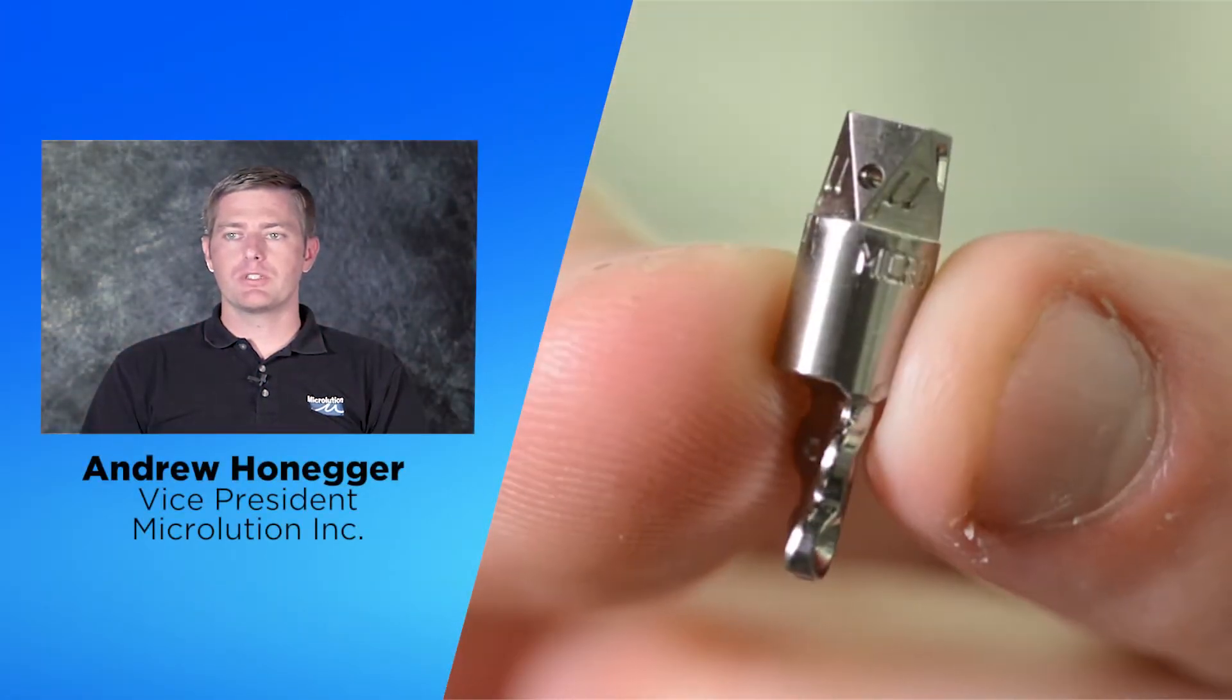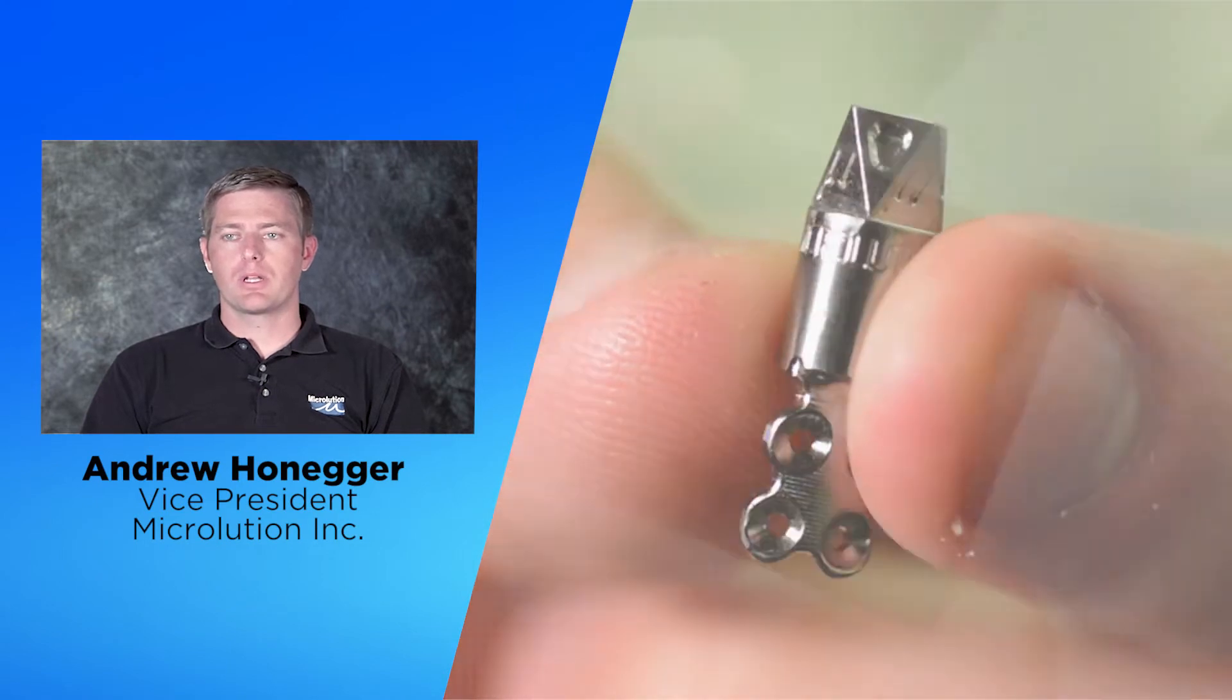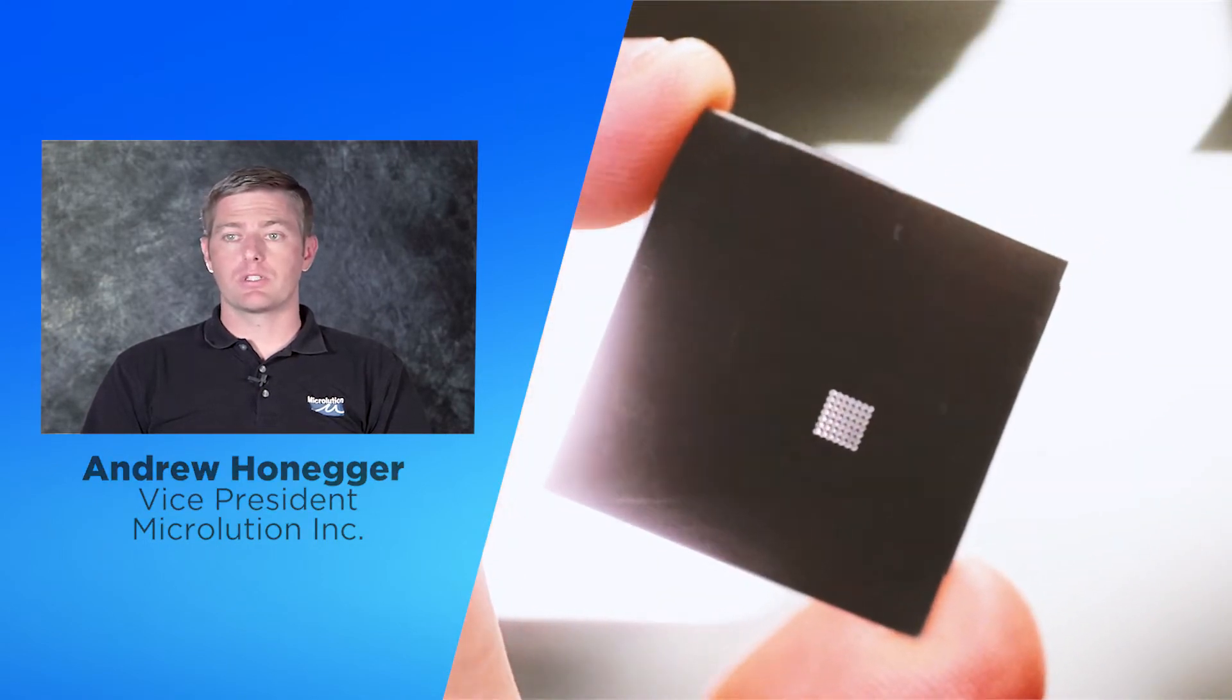Microlution specializes in high-precision machines for small parts, and in particular they're making very small features on small parts.